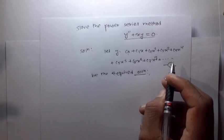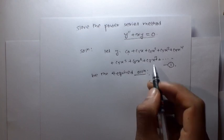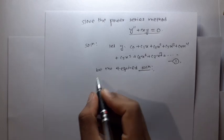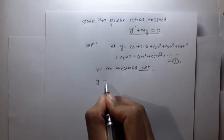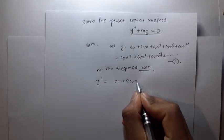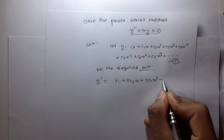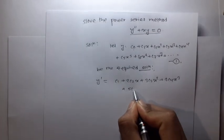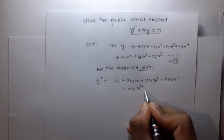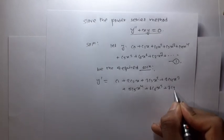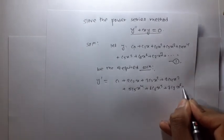Now differentiating equation 1 with respect to x, we get y dash is equal to c1 plus 2c2x plus 3c3x squared plus 4c4x cubed plus 5c5x to the 4th plus 6c6x to the 5th plus 7c7x to the 6th plus dot dot dot.